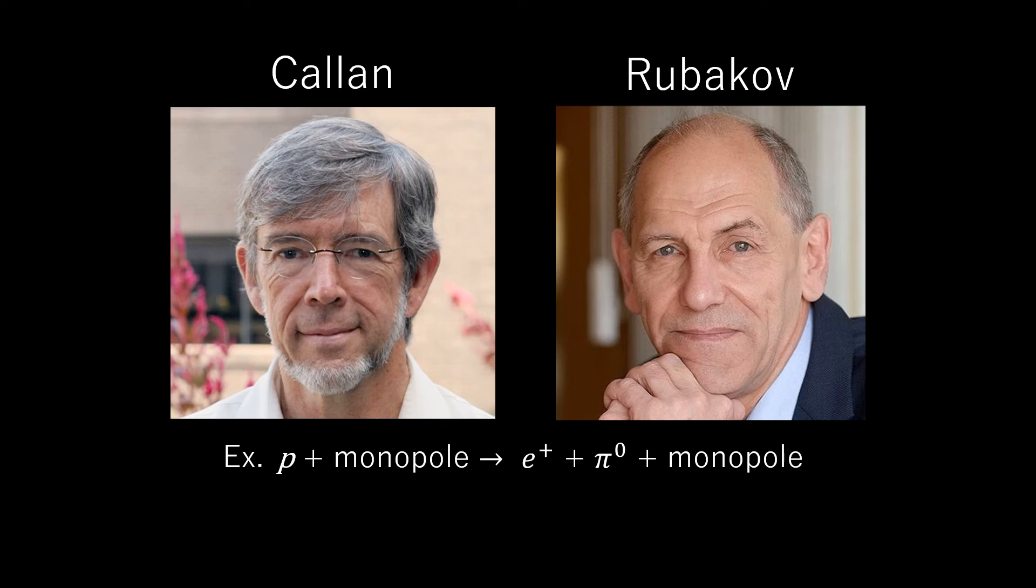The surprising feature, pointed out by Callan and Rubakov, is that these processes are not suppressed by powers of the gauge boson mass. Instead, the cross sections for catalysis processes such as proton plus monopole goes to positron plus π0 plus monopole are essentially geometric.